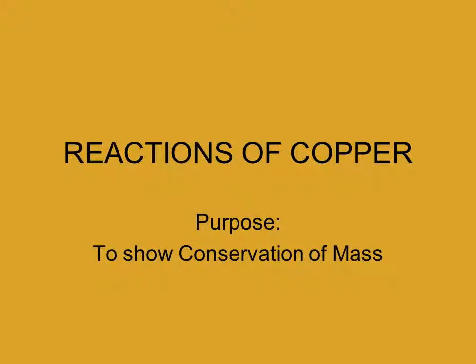This series of reactions is designed to show you that if we start with a certain amount of copper and react it in a number of different ways, no matter what we do, as long as we don't cause any experimental errors, we should end up with the same amount of copper at the end as we had at the beginning. This is called the conservation of mass.